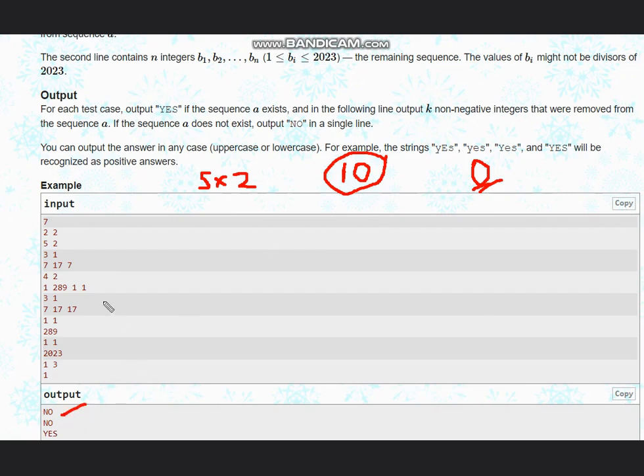In the second case, 7, 17, and 7. If you multiply this then it is 49, 49 into 17. Check 49 into 17 which comes out to be 833. So we want only one element extra to make it 2023.